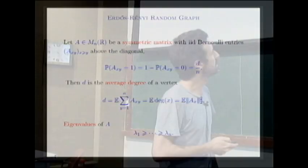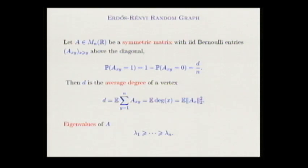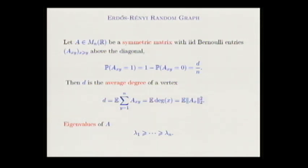I'll start by the case of the norm of sparse random matrices, taking the simplest example. I take a random graph and look at the adjacency matrix — an array of Bernoulli variables, i.i.d. above the diagonal, normalized so that they equal 1 with probability d over n, where d is the average degree of a vertex. The degree is the square of the L2 norm of each row.